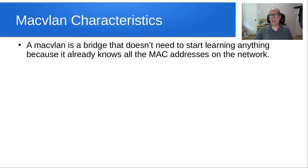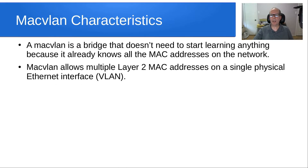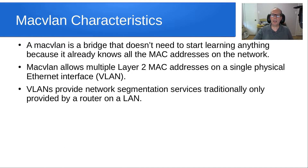A Mac VLAN is a bridge that doesn't need to start learning anything because it already knows all of the Mac addresses on the network. Mac VLAN allows multiple layer two Mac addresses on a physical Ethernet interface or a single Ethernet adapter. VLANs provide network segmentation services traditionally only provided by a router on a LAN.